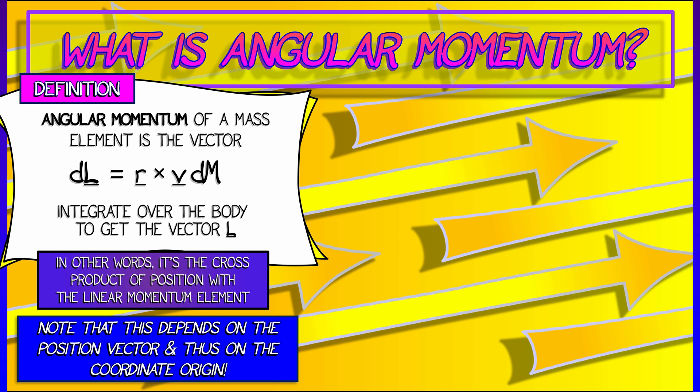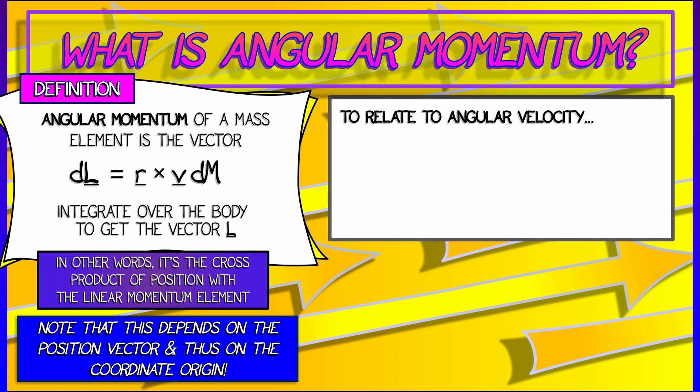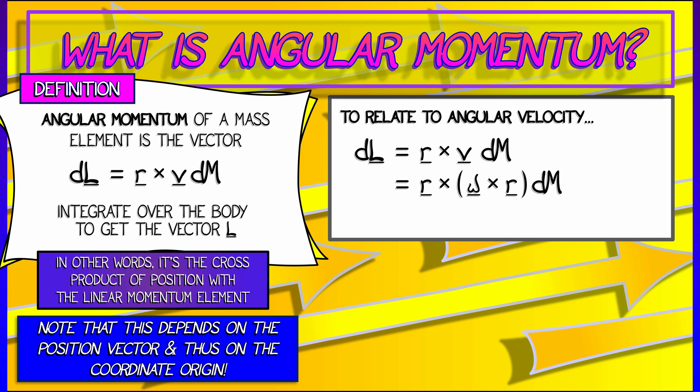Now you've got to be a little careful here. It would seem as though, as this depends on the position vector r, you have to be careful — it depends on the origin of your coordinate frame. So given that, to relate it to the angular velocity, we're going to take this expression dl equals r cross v dm, and then substitute in for v what we know it to be equal to, that is omega cross r.